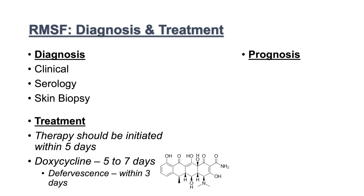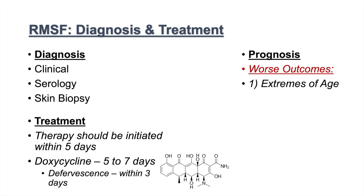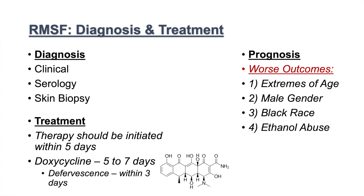If left untreated, mortality can be as high as 20 to 30 percent, making it a very lethal infection. Worse outcomes are associated with several factors: extremes of age — children under four or five and adults over 60 — male gender, Black race, chronic ethanol abuse, and certain genetic conditions such as glucose-6-phosphate dehydrogenase (G6PD) deficiency.